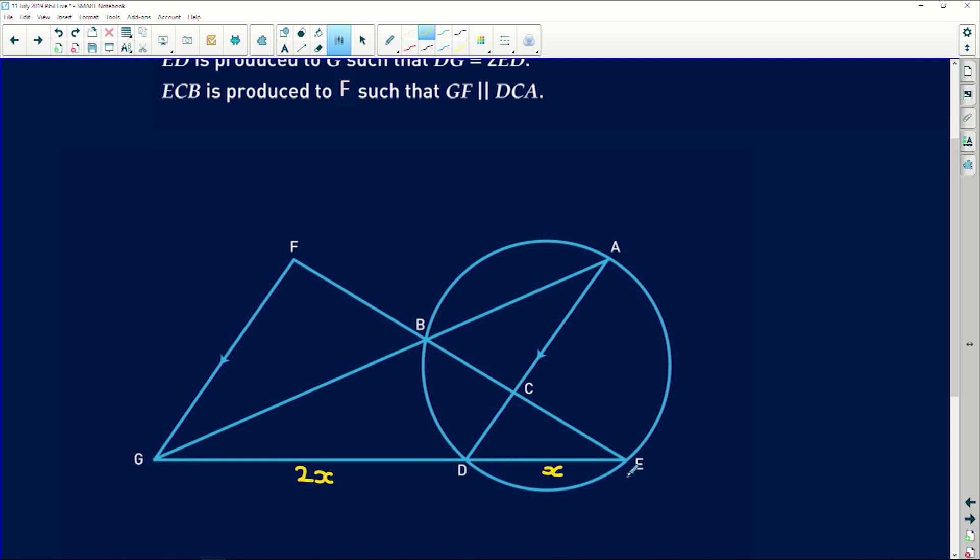Lastly, it says that ECB, this line here, is produced to F, such that GF is parallel to DCA. Okay, so we've got a lot of information here happening in this diagram.